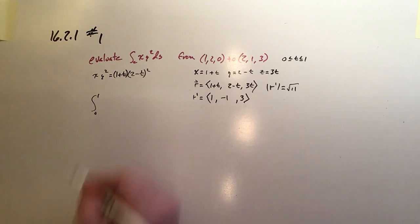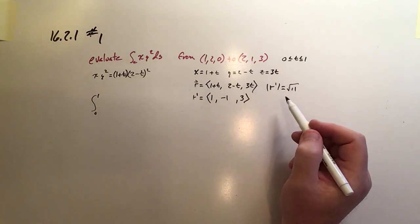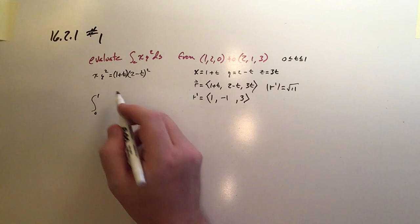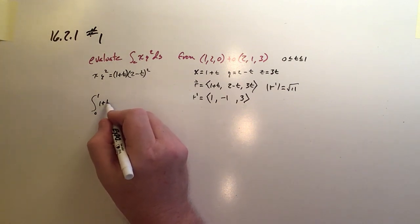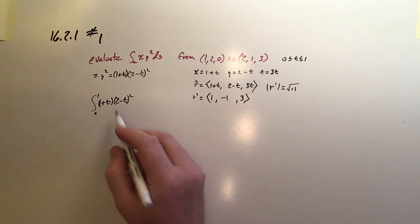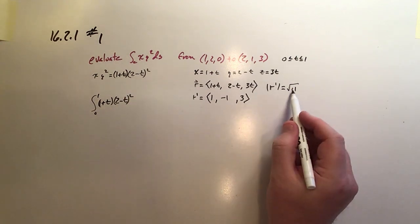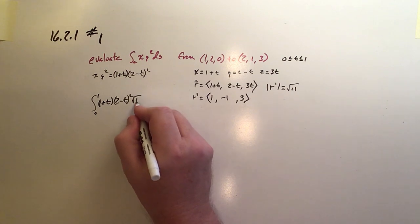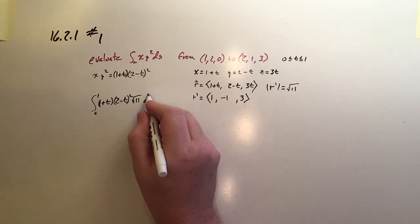It's going to be the integral from 0 to 1 for t. This is our argument: (1 plus t) times (2 minus t) quantity squared. And then we need the R prime magnitude, square root of 11, and this will all be dt.